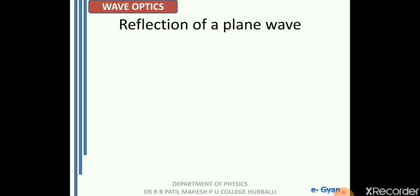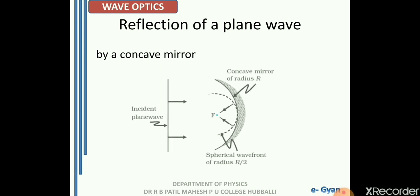Similarly, when a plane wave undergoes reflection by a concave mirror, it gets converted into a spherical wave front of radius equal to the focal length, which is equal to r divided by 2, where r is the radius of curvature of the concave mirror.